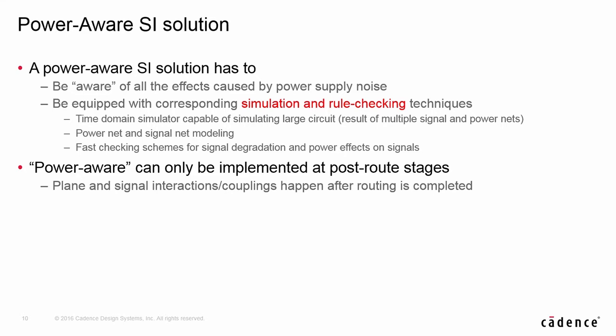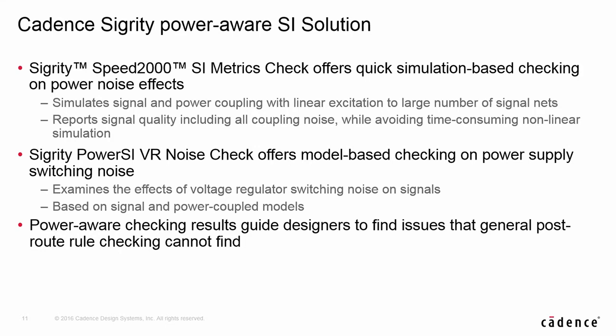How do we check the problems? From the previous discussion, we can see that our only option is to go with simulation and modeling on power and signals. But performing SSN-type simulation in a post-route environment with nonlinear models requires special field solvers to handle power planes and shapes, and therefore has performance issues — this cannot be used for checking purposes. Designers need fast checking tools to quickly obtain potential design issues. Do we have a tool for power-aware design checking? The answer is yes. Cadence Sigurity provides SI metrics check for a complete power-aware solution.